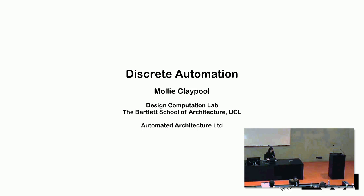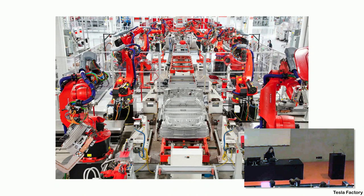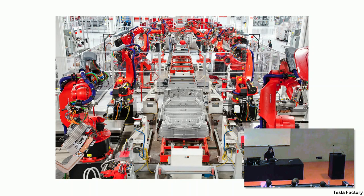We can begin by looking at this idea of discrete automation through the digitization of the built environment. When we do, a few contradictions appear. If we think of architectural projects as buildings rather than purely as a practice of the speculative academy, it's relatively obvious that the elements that make up a typical building are not assembled in a factory like an iPhone, Tesla, Amazon Alexa, or any kind of everyday digital objects that we use. And there are very few exceptions to this.